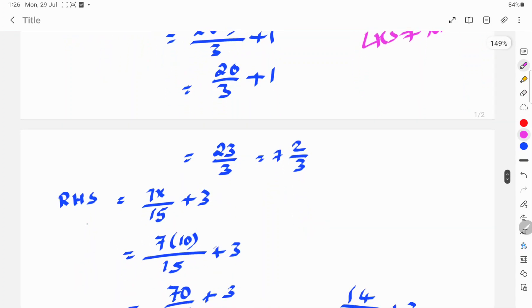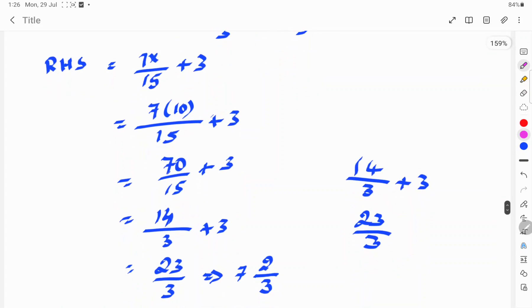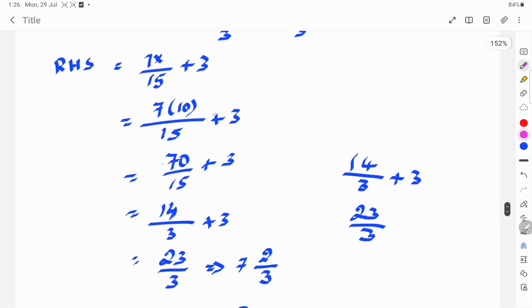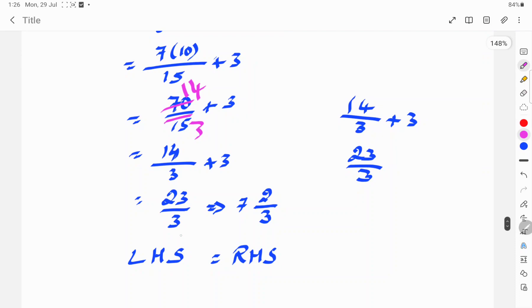Then you will check the RHS. RHS is equal to 7x by 15 plus 3. 7 into 10 by 15 plus 3. 70 by 15 plus 3. So, we will cancel: 5 into 70 is 14, and 5 into 15 is 3. So, 14 by 3 plus 3. So, 23 by 3, that implies 7 and 2 by 3.